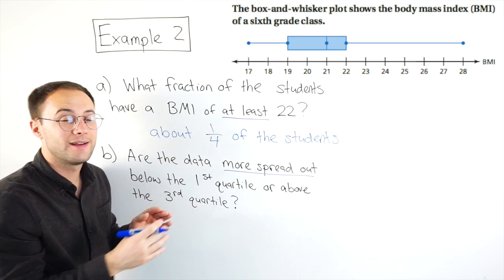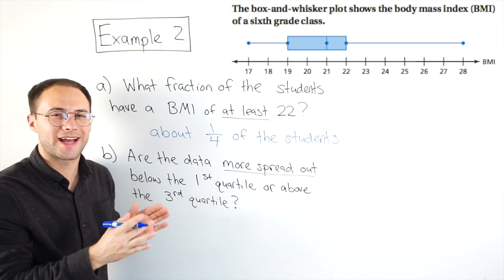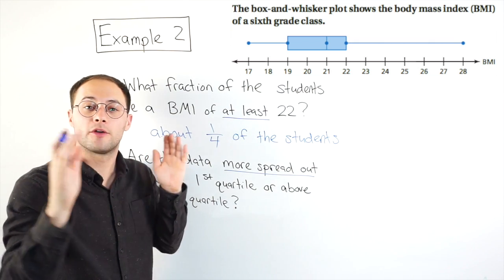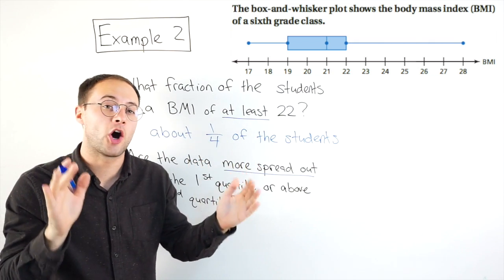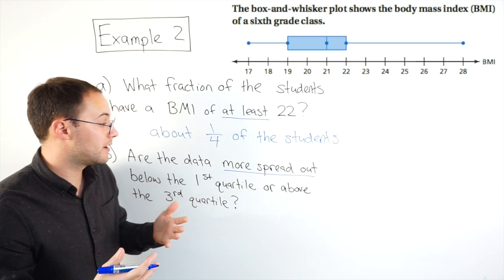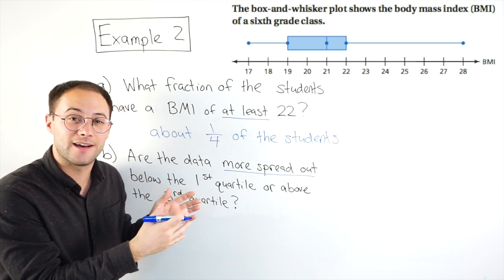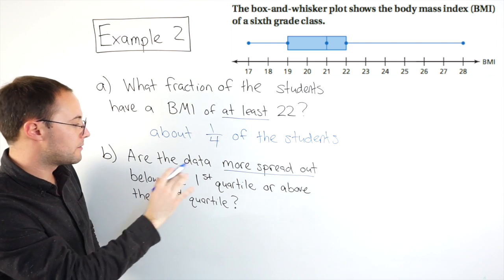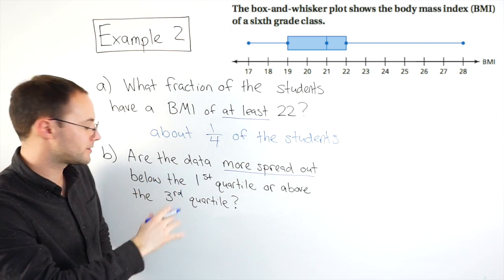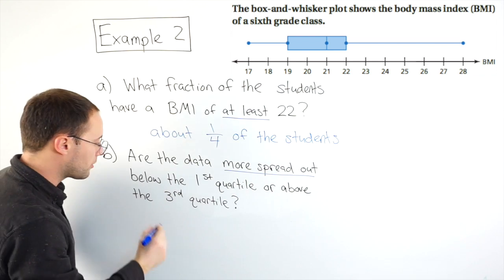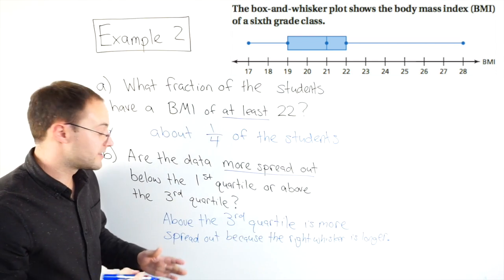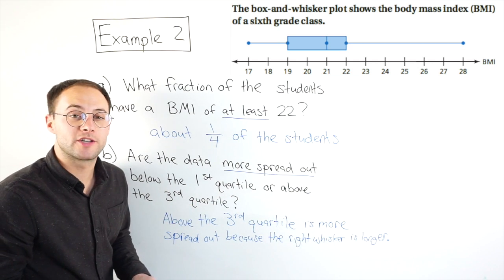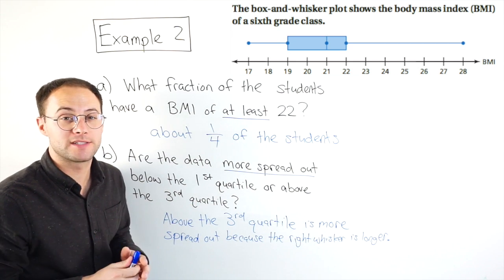Well, if you look, the lengths of those whiskers are not the same. The left one is much shorter than the right whisker. The right whisker is a lot longer, which would tell you that that data is much more spread out. So the answer to B, are the data more spread out below the first quartile or above the third quartile? So the answer is going to be above the third quartile because that right whisker is longer. Let's try part C.